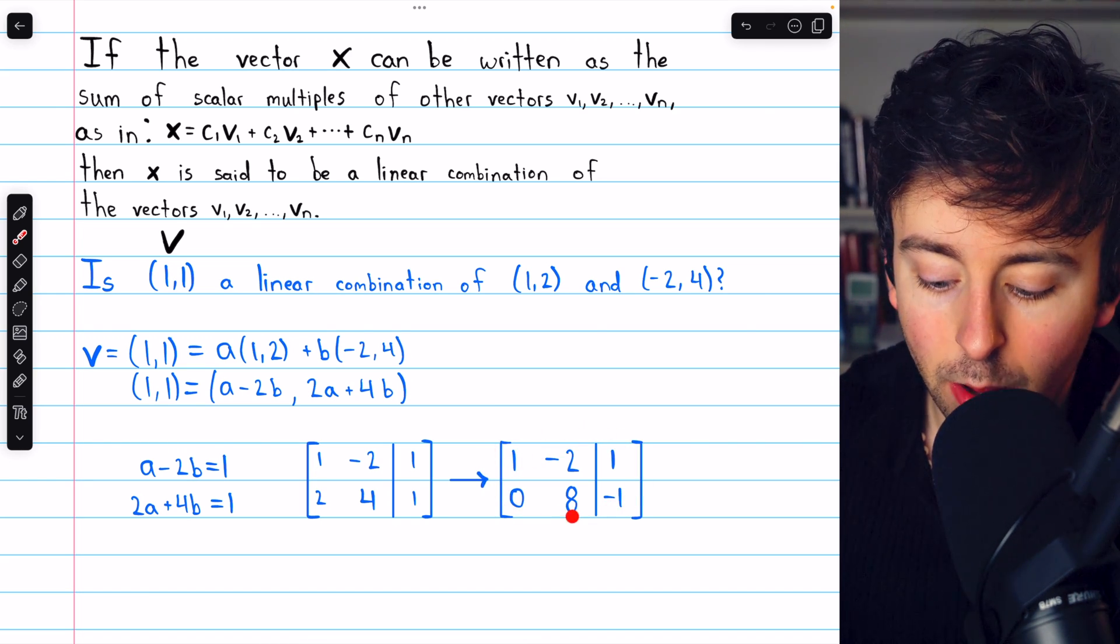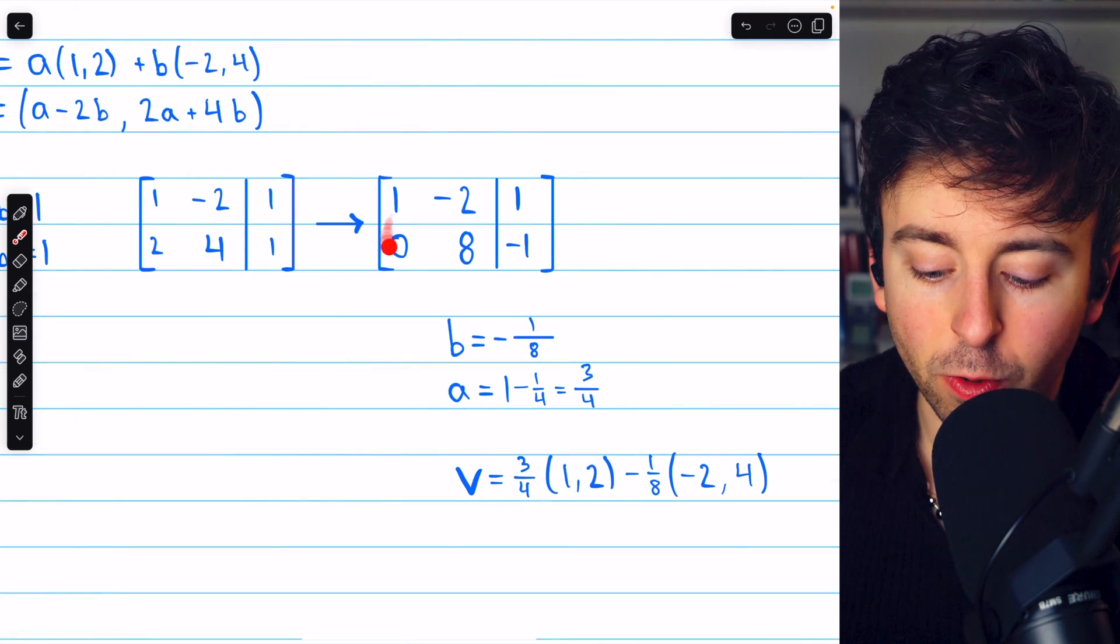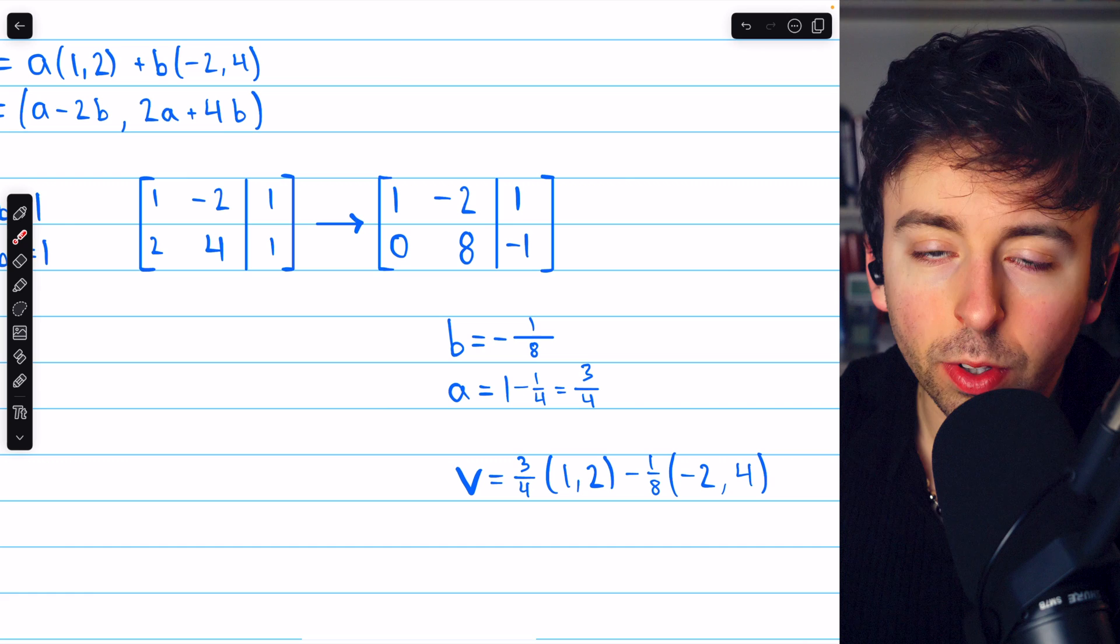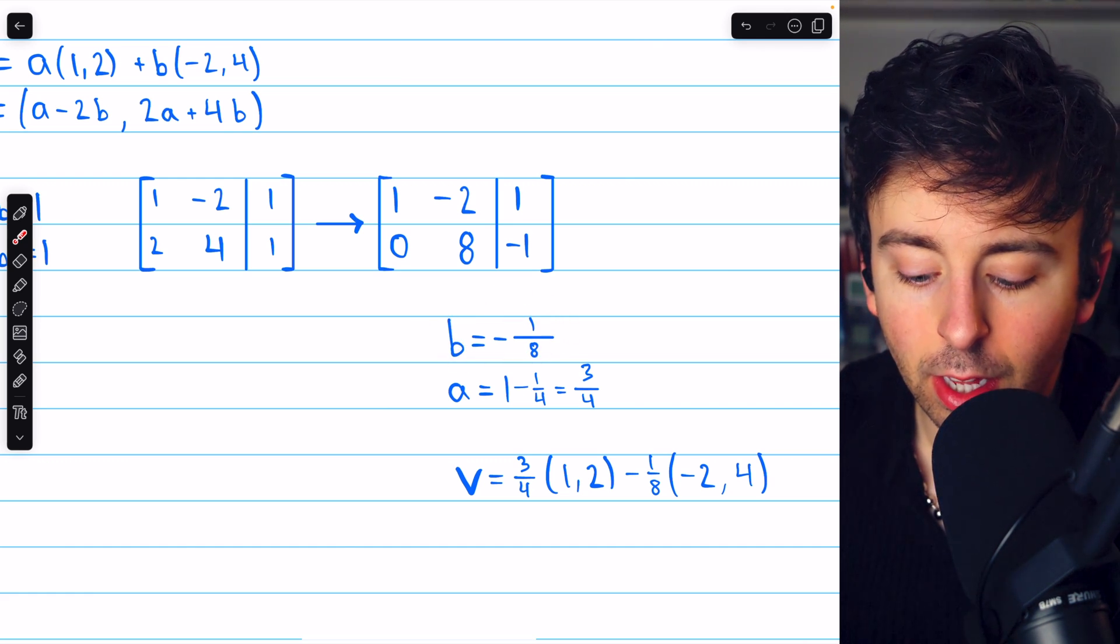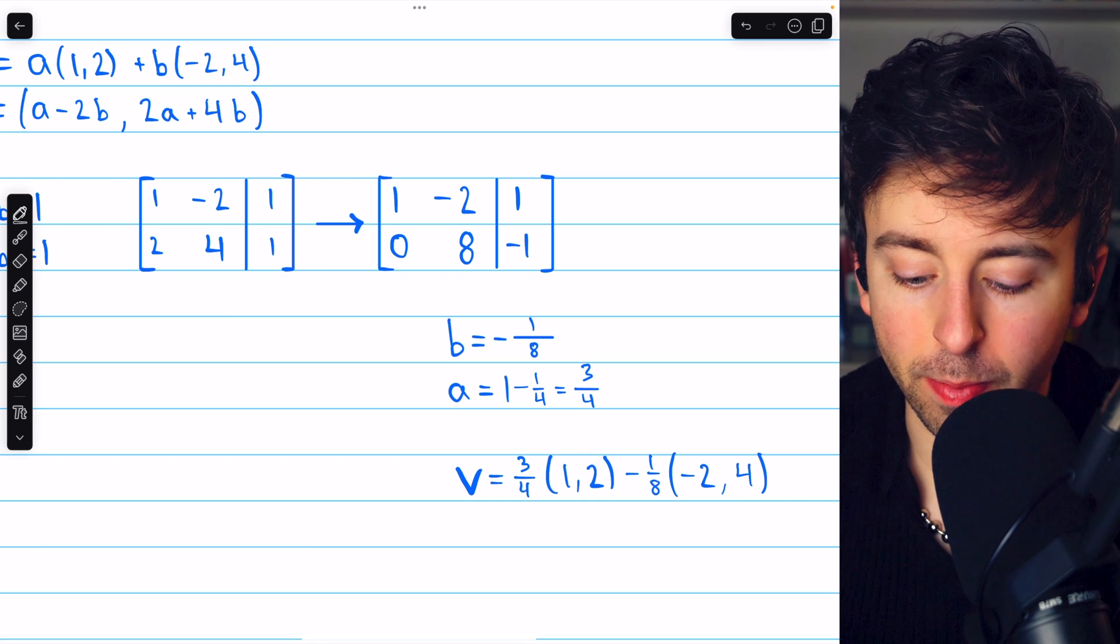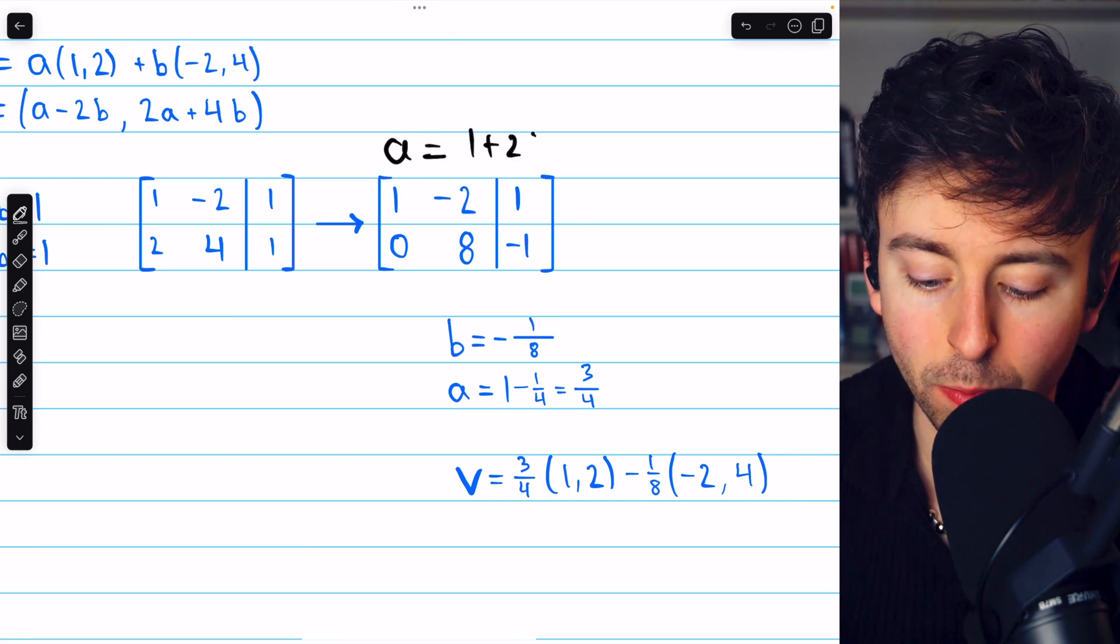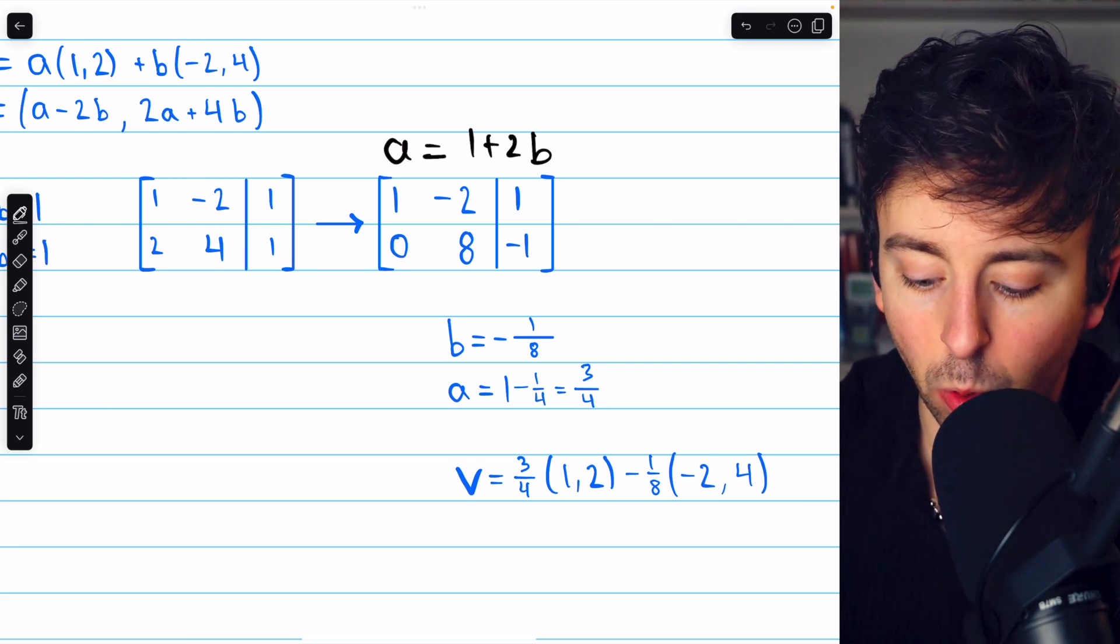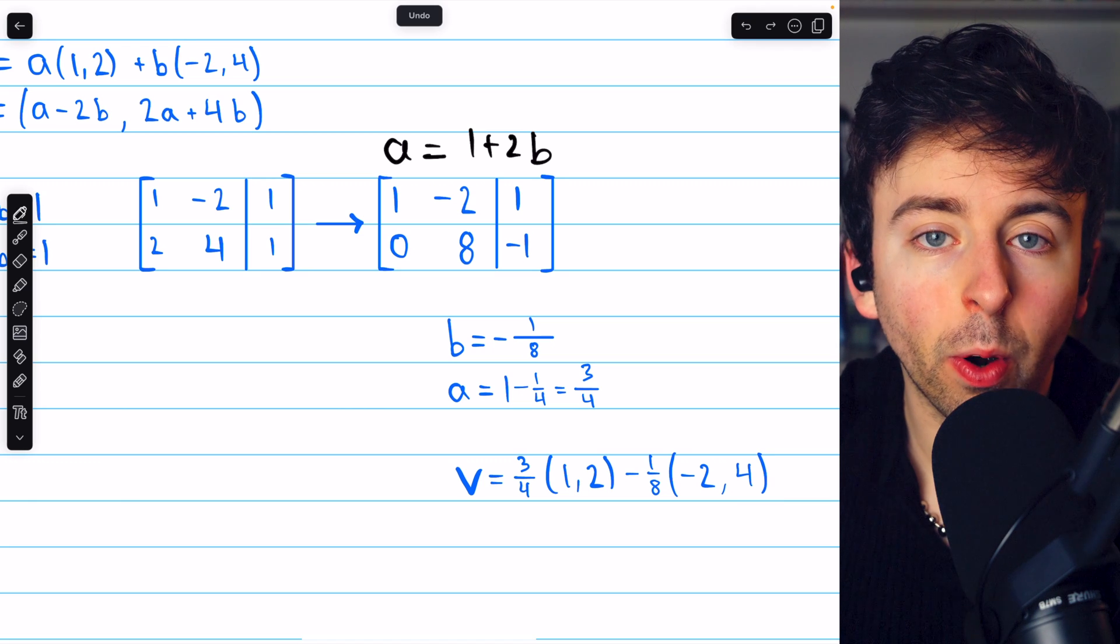At this point, we can quickly solve for b and then use that to solve for a. We see from this matrix that 8b equals -1. So b equals -1/8. Thus, since from the first row, we have that a equals 1 + 2b, it must be the case that a equals 1 - 1/4, which is equal to 3/4.